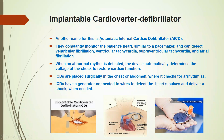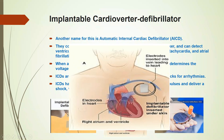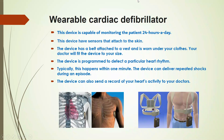The next type is the implantable cardioverter defibrillator, also known as the automatic internal defibrillator or AICD. ICDs are placed surgically in the chest or abdomen, where they check rhythms continuously. The ICD has a generator connected to leads that detect the heart pulses and deliver a shock when needed.